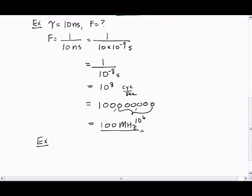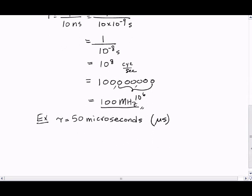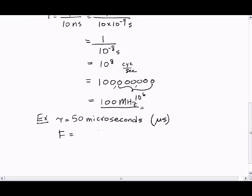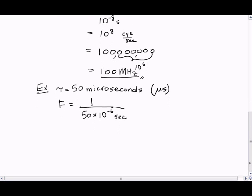Let's do one more example. Suppose τ equals 50 microseconds. So in this case, our frequency equals 1 over 50. Now micro is 10 to the minus 6 seconds. Okay, so that's micro.